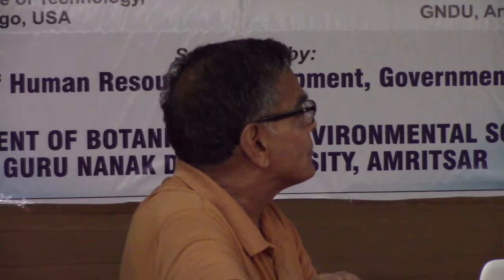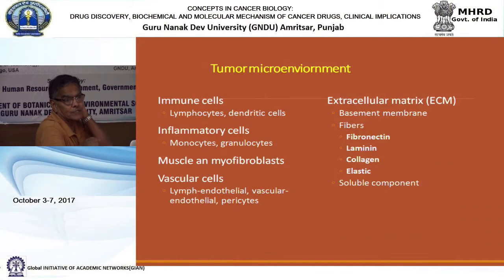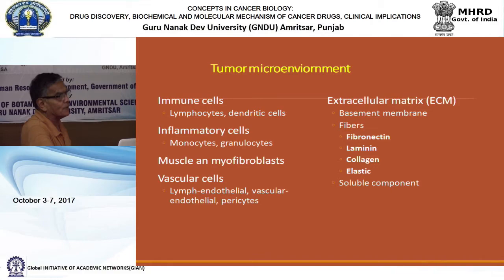The tumor microenvironment includes different cell types. The extracellular matrix, which constitutes the basement membrane - including fibronectin, laminin, collagen and other fibers - makes the cellular surface and is quite crucial in terms of its regulation.